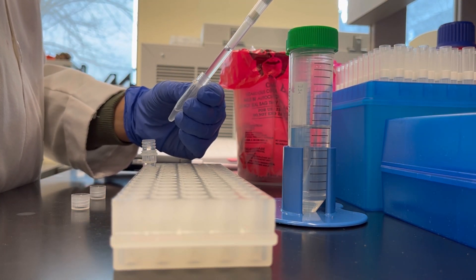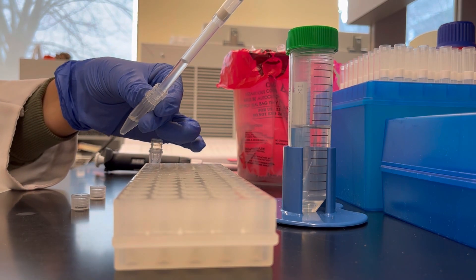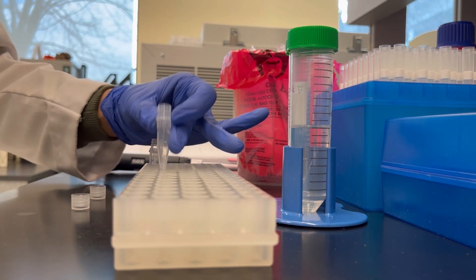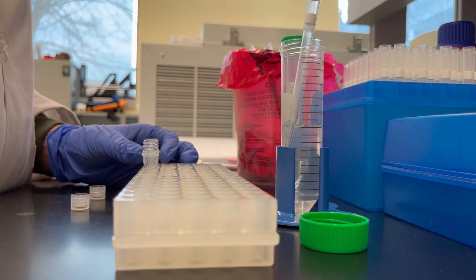For the second wash, discard the ethanol and repeat the previous step. Add ethanol, vortex, and centrifuge.